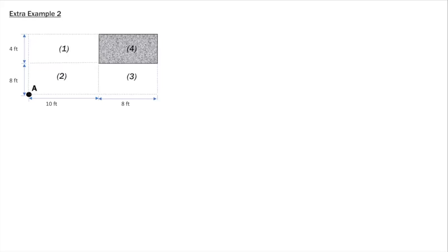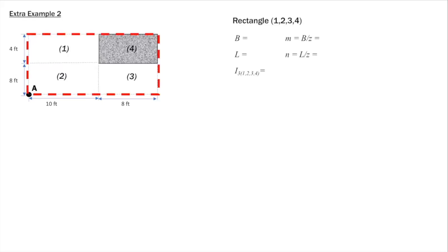So first, for the large rectangle that covers area 1, 2, 3, 4, the dimension of this large rectangle: we use B for the width, so this width is 4 plus 8, which is 12 feet. And the length is 10 plus 8, which is 18 feet. So the two parameters M and N are calculated as: for M, it's B over z, where z is the depth of the point, 16 feet for this example. So M is 12 over 16, that's 0.75. And N is 18 over 16, which is 1.125.